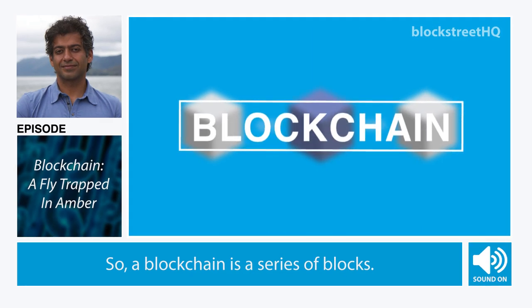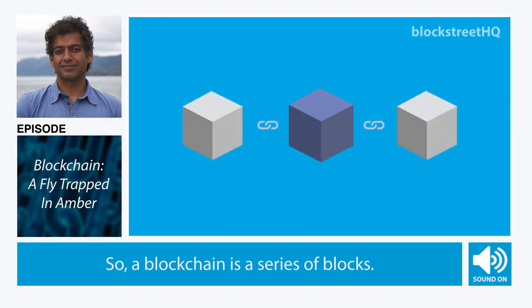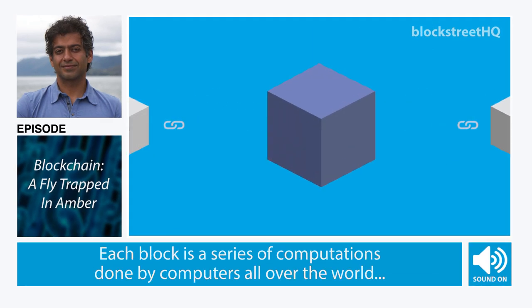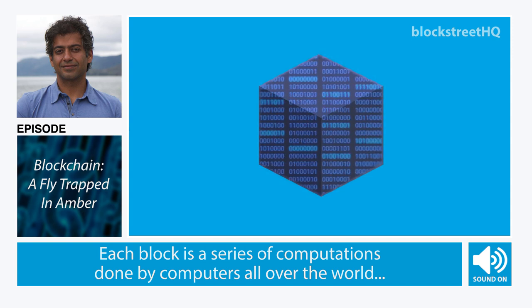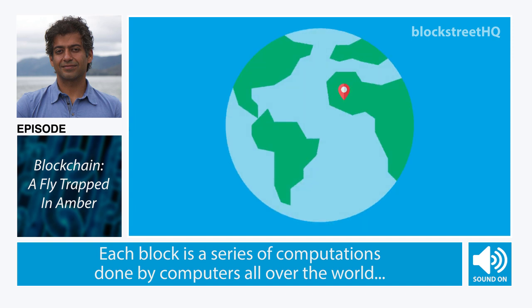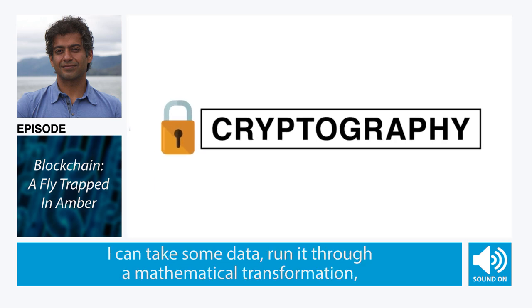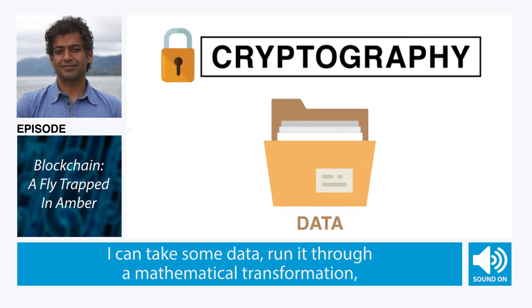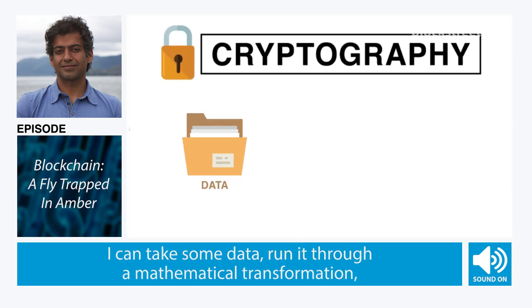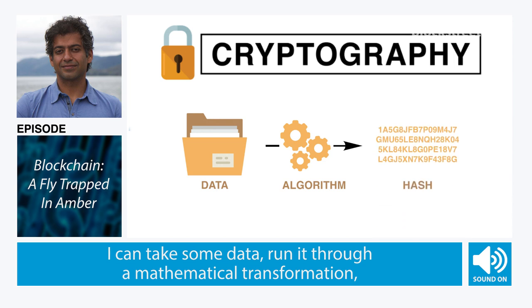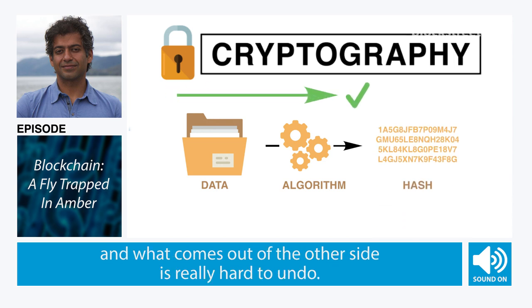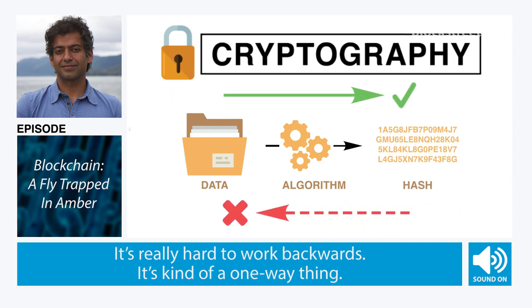A blockchain is a series of blocks. Each block is a series of computations done by computers all over the world using serious cryptography in a way that's very hard to undo. I can take some data, run it through a mathematical transformation, and what comes out of the other side is really hard to undo. It's really hard to work backwards — it's kind of a one-way thing.